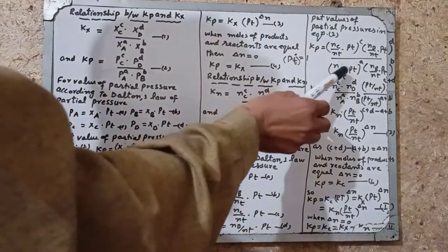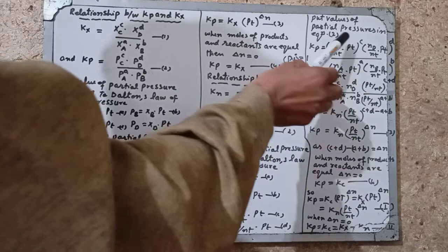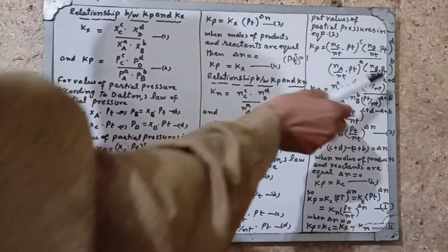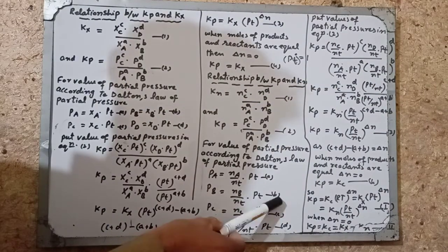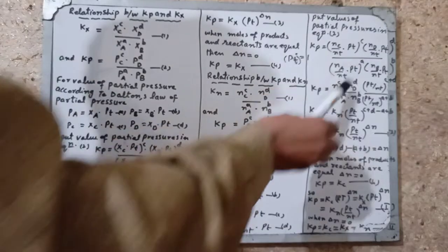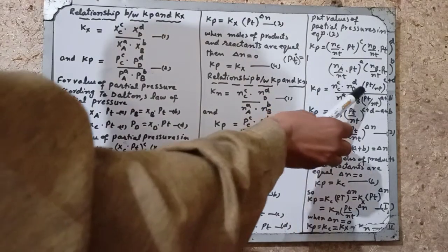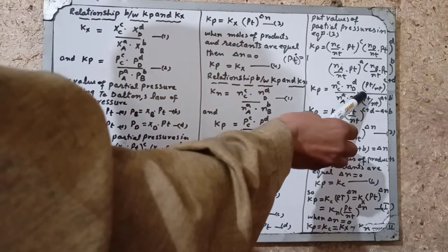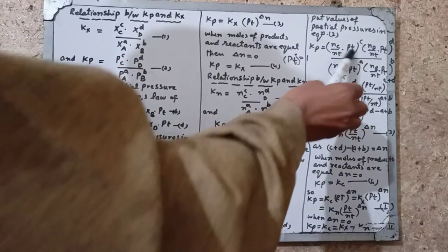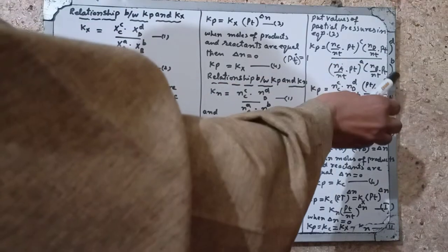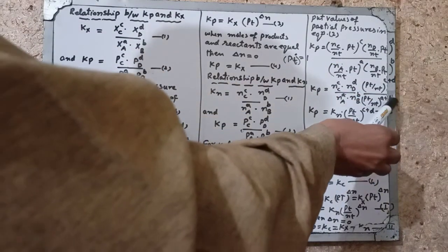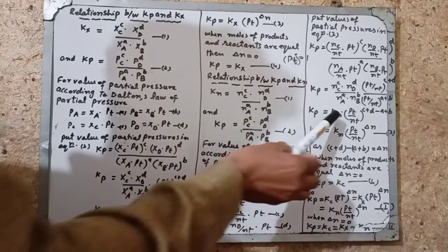After putting the values of partial pressures into equation 2, Kp = [(nC/nT × PT)^c × (nD/nT × PT)^d] / [(nA/nT × PT)^a × (nB/nT × PT)^b]. Expanding and separating the mole terms: numerator gives nC^c × nD^d and denominator gives nA^a × nB^b, which equals Kn. Similarly, PT/nT is common: in numerator its power is c+d and in denominator a+b, so Kp = Kn × (PT/nT)^(c+d−a−b).